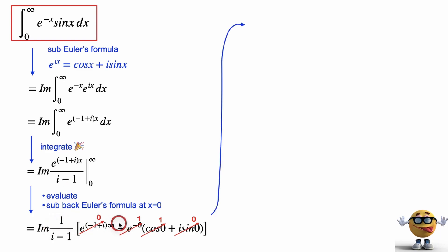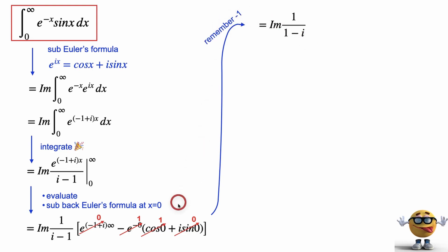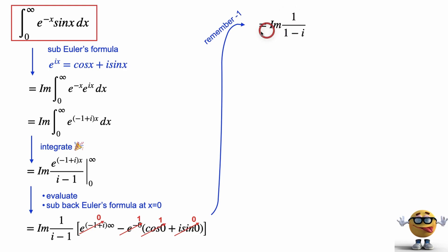So this becomes the imaginary part of one divided by one minus i. I brought the negative one into the denominator, so rather than saying i minus one I kept the whole thing positive and wrote one minus i.